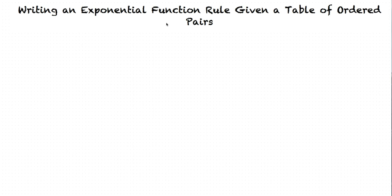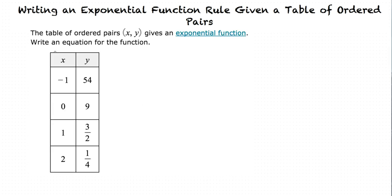Let's take a look at this example. The table of ordered pairs, x and y, gives an exponential function. Write an equation for the function. And we have these ordered pairs given right here.